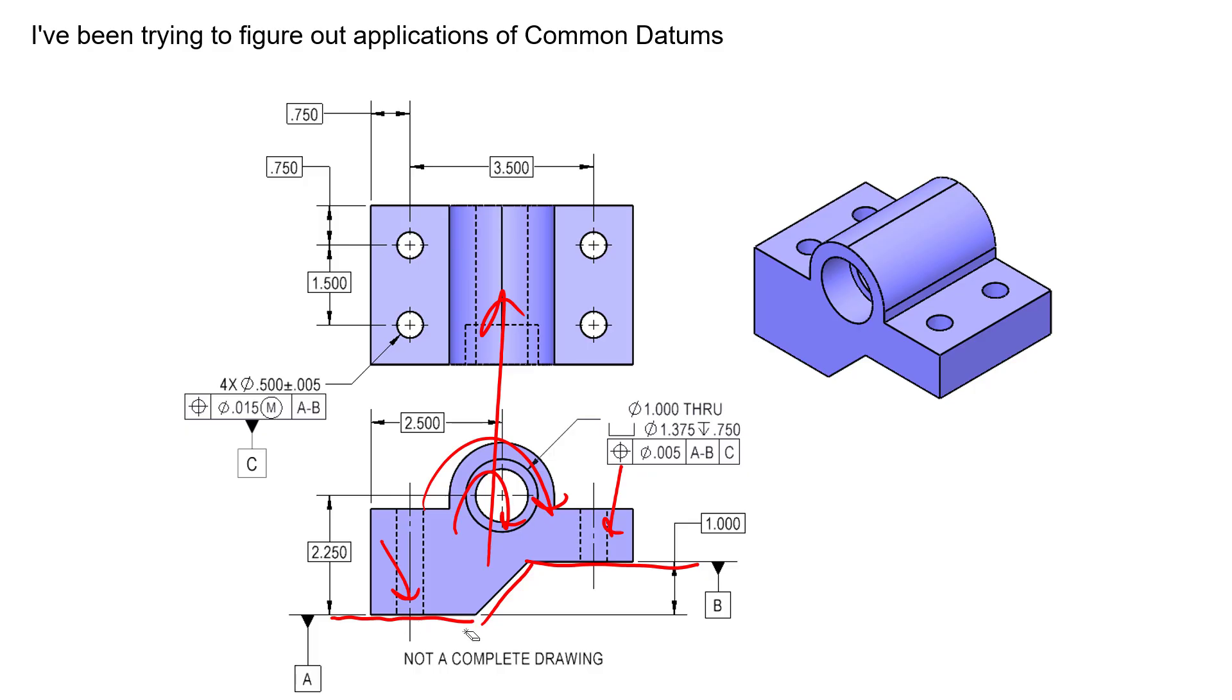We're not going to align to this surface first and then this one, or align to this surface and then this one. We're going to use both surfaces simultaneously. We can see that we've actually qualified this pattern of four holes with position to each other, and then we've re-identified that as datum feature C. We're making sure those four holes are not only located to each other but also making sure they're perpendicular to datum plane A-B.